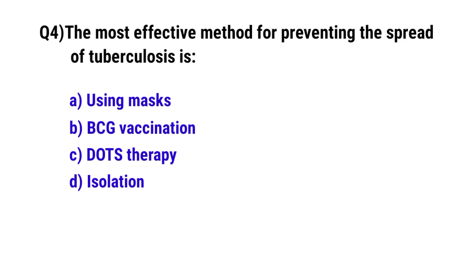Question No. 4. The most effective method for preventing the spread of tuberculosis is? The correct option is C: DOTS therapy.